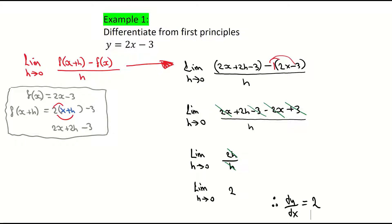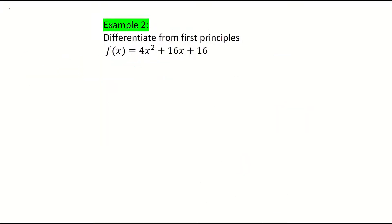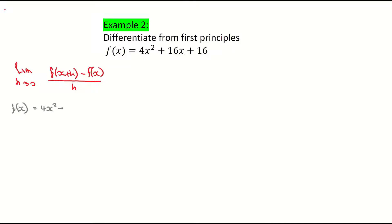Let's look at a second example, which is a little bit trickier. We're going to differentiate from first principles a quadratic function: f of x equals 4x squared plus 16x plus 16. As soon as you see the words 'first principles,' we need to write down our formula — the limit as h approaches 0 of f of x plus h minus f of x, all divided by h. Now I'll write down f of x, which is 4x squared plus 16x plus 16, and then find f of x plus h by substituting x plus h everywhere there is an x.